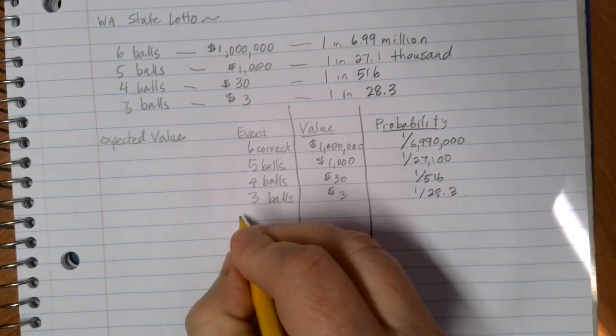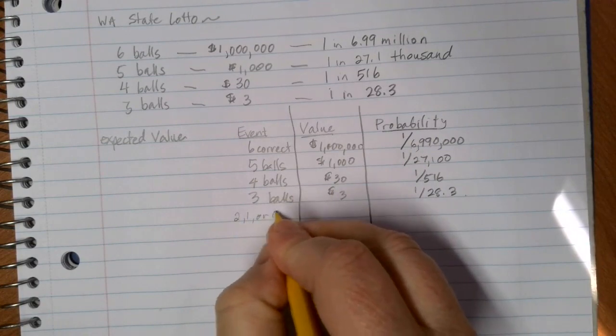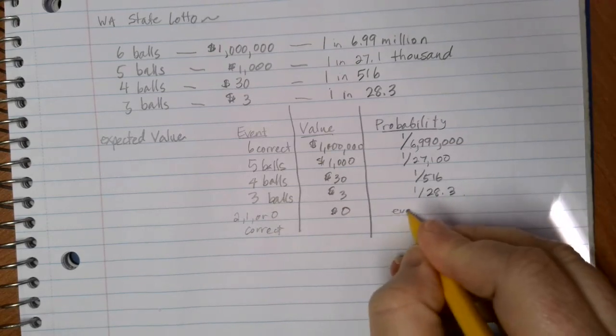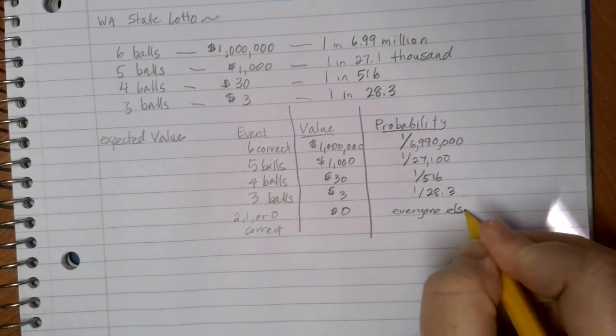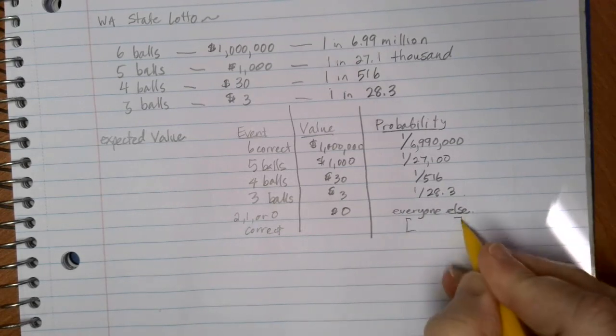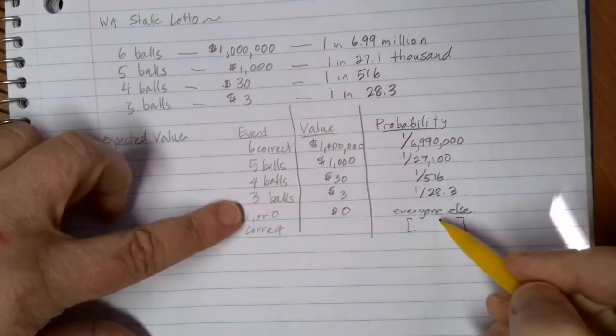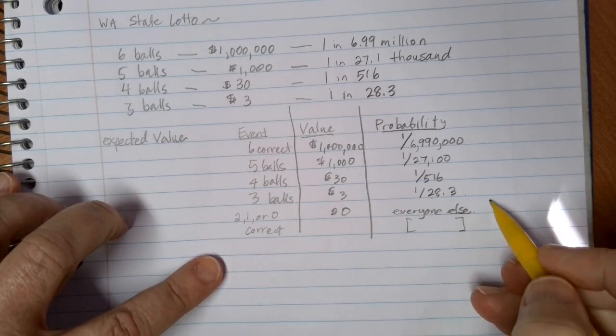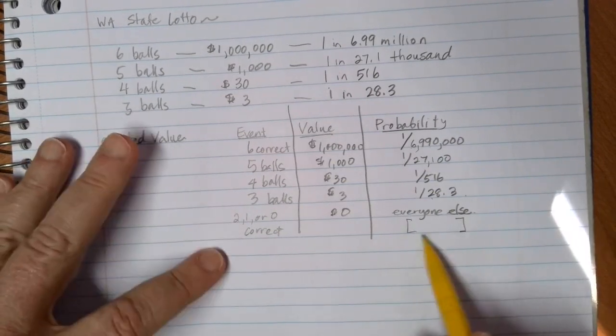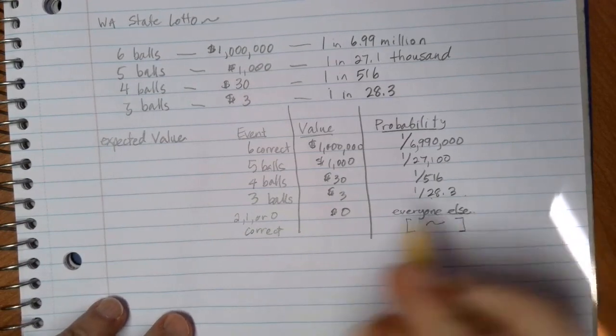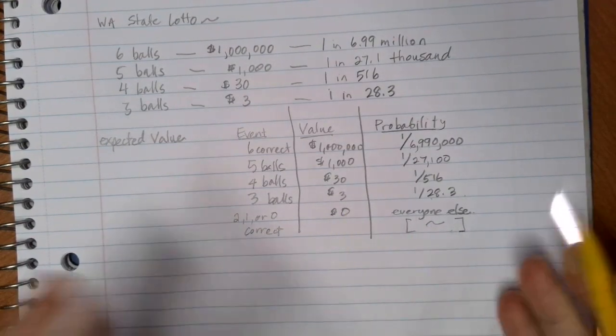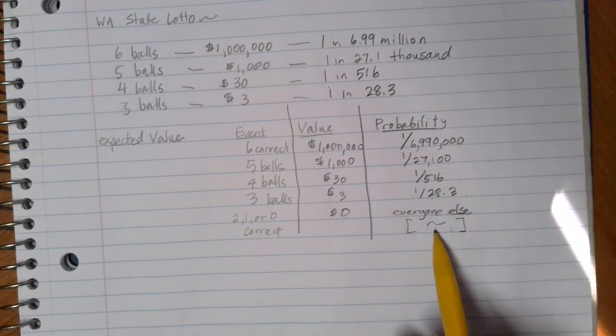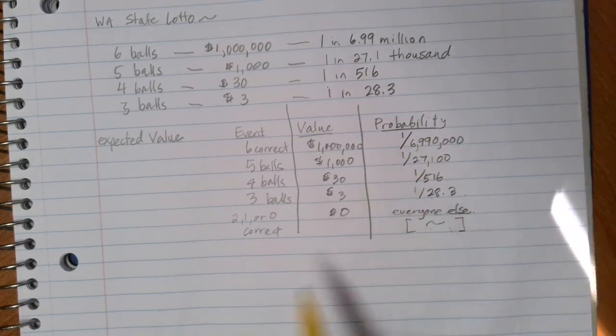And everything else, so 2, 1, or 0 correct, has a value of $0. And this probability is going to be everyone else. We can find what that percentage is for everyone else here. We just need to make sure that we have everything taken into account. We can add all of these probabilities together, and then do 1 minus that number to get what that 100% probability is. Keep in mind, though, as you go through, that if we're multiplying that probability by 0, it's not overly important that you actually calculate this all the way out. It's just important to make sure that you recognize that all of these together give us every single possibility.